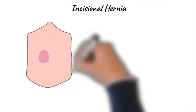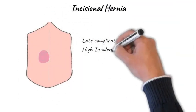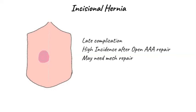In the long term, patients who have an open abdominal aortic aneurysm repair are at quite high risk of developing an incisional hernia. Incisional hernias occur in this group at a higher rate than other groups of patients undergoing a laparotomy. It may manifest many years following the original repair and may need to be repaired with some form of prosthetic mesh.